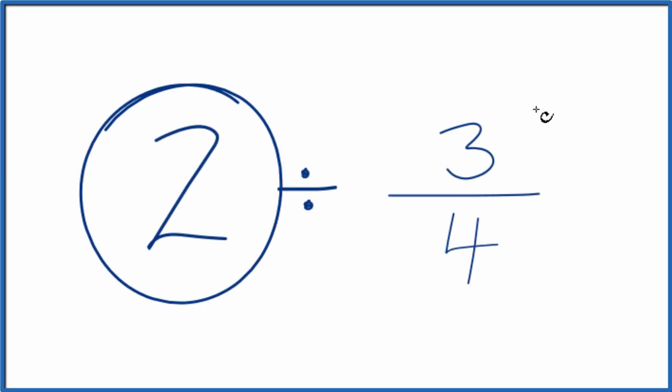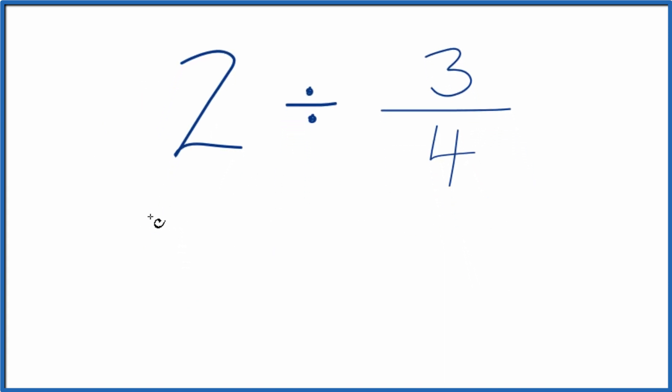Let's divide 2 by 3 fourths. Here's how we do it. Instead of 2, let's call this 2 over 1, because 2 divided by 1 is still 2. But now we have a fraction to work with.